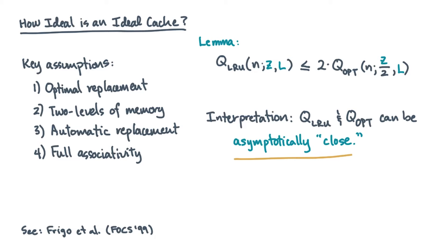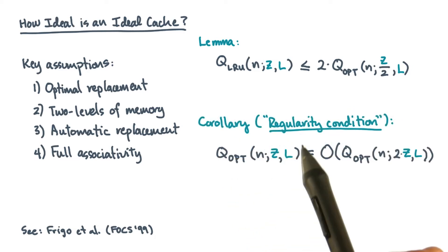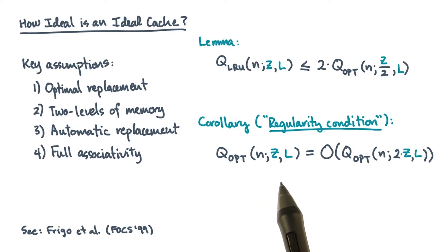Now there's a more specific technical requirement, which is one of regularity. We say Q_OPT is regular if it's big O of Q_OPT with twice the cache. In other words, let's say you design an algorithm and you find out what Q_OPT is on a machine with an optimal replacement policy.